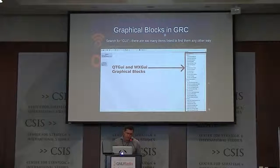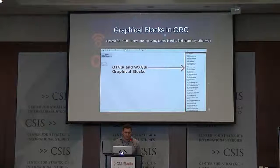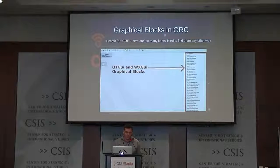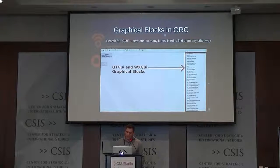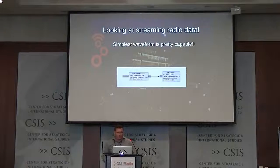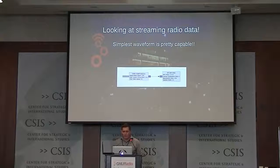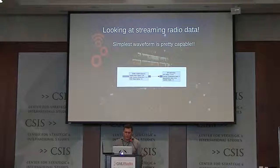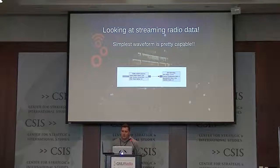Getting to these tools is pretty simple. It can be hard to find things, but if you just type GUI in the search box, you get a wonderful list of all of the QTGUI and WXGUI widgets, which you can drop into an application very quickly from GRC. The simplest waveform you could put together to start looking at some live over-the-air spectrum is to take a USRP source block and run it straight into a QTGUI sink block. This is like the simplest thing you can do and it's actually pretty powerful — essentially a standard spectrum analyzer in many ways.